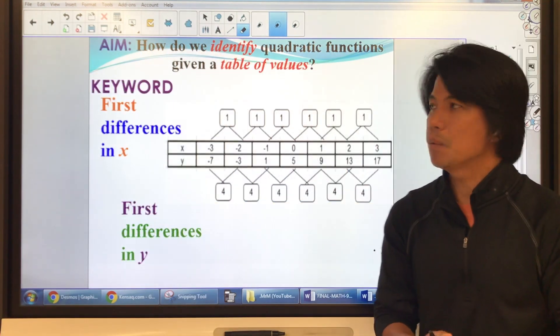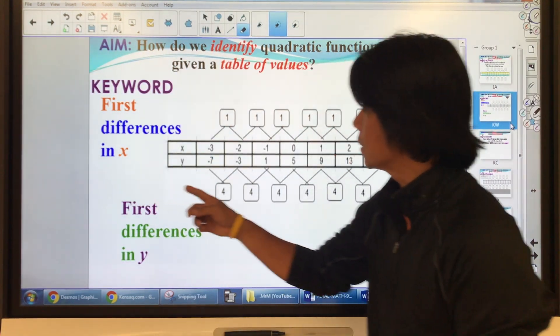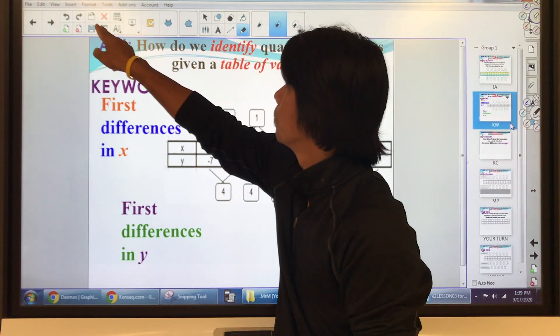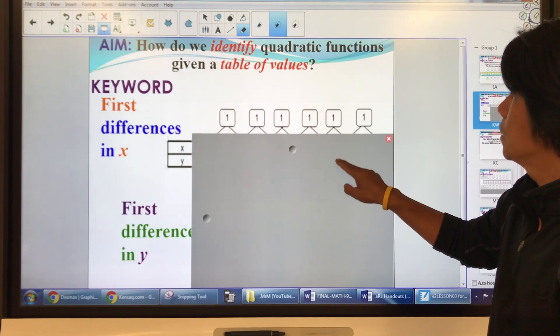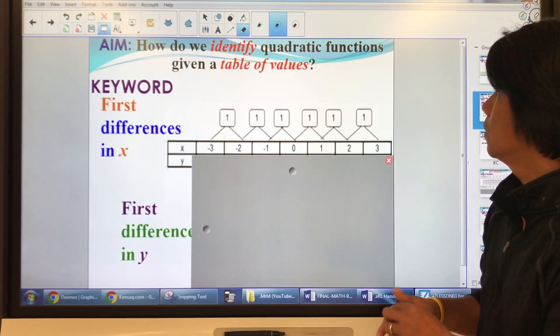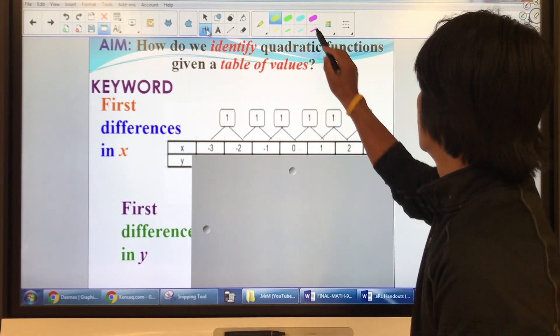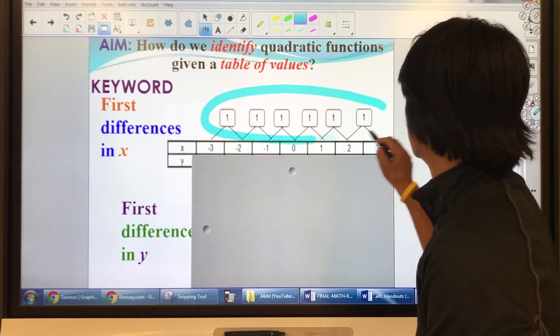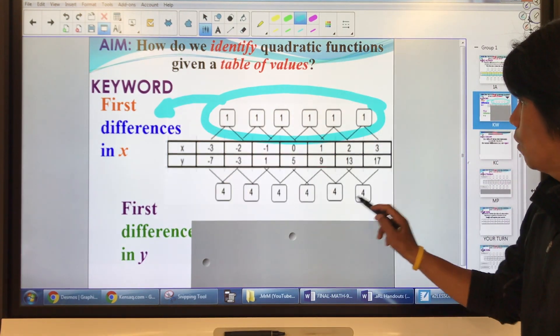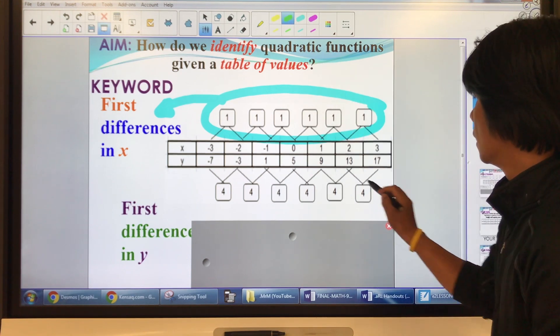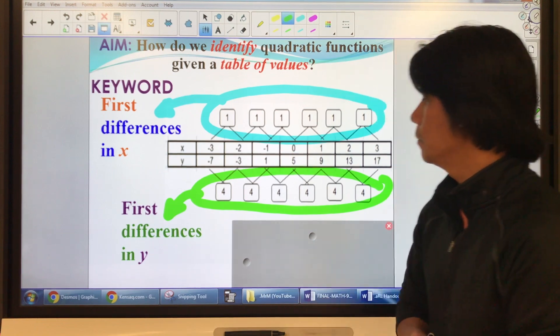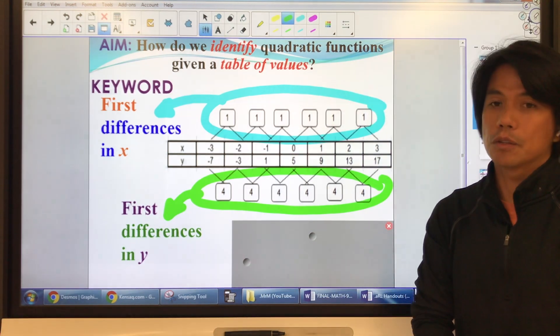Let's go to the keyword. What is meant by first differences? If you get the differences of each row, these values 1, 1, 1, 1, 1 are the first differences of the x values. And this 4 here are called the first differences of the y values, or in y.